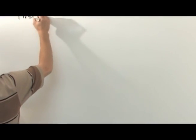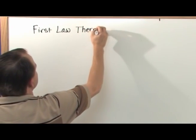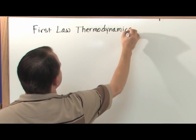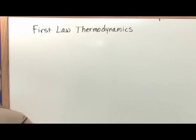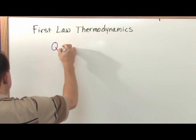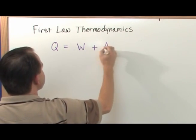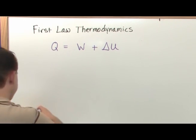The first law of thermodynamics is actually not a very complicated looking equation compared to what you might think. Q is equal to work plus something called delta U and I haven't told you what that is. So let's go ahead and figure it out.